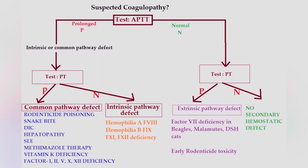Here is the protocol. First we test the APTT. If it is prolonged, we understand that there is a defect in the intrinsic or the common pathway. Then we test the PT. If the PT is also prolonged, we identify that the defect is in the common pathway. Possible causes include rodenticide poisoning, snake bite, DIC, hepatopathy, systemic lupus erythematosus, methimazole therapy, vitamin K deficiency, and deficiency of factors 1, 2, 5, 10, and 12.